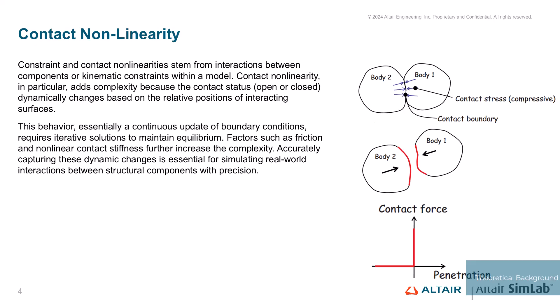Constraint and contact non-linearities arise from interactions between components or kinematic constraints within a model. Contact non-linearity, in particular, introduces complexity as the status of contact — open or closed — changes dynamically based on the relative position of interacting surfaces. This behavior, akin to boundary condition updates, necessitates iterative solutions to maintain equilibrium. Additionally, factors like friction and non-linear contact stiffness contribute to the overall complexity. These dynamic changes in boundary conditions and stiffness make constraint and contact non-linearities a critical consideration in accurately simulating real-world interactions between structural components.